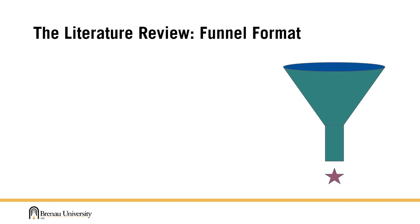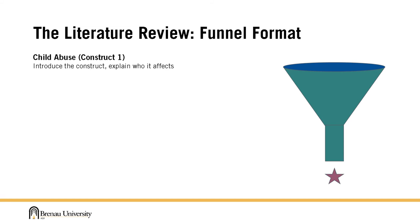Here's the funnel for our real-life example of an article on resiliency and child abuse. We identified two different main ideas: childhood abuse and resiliency. In the real-life literature review, we'd start by introducing the first main idea — childhood abuse — and explain what this is, who it affects, how common it is, and so on.